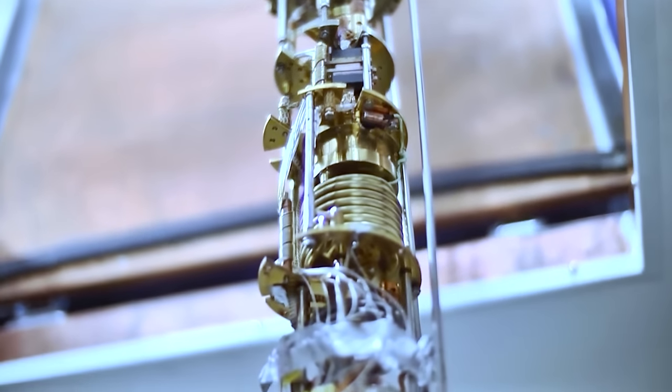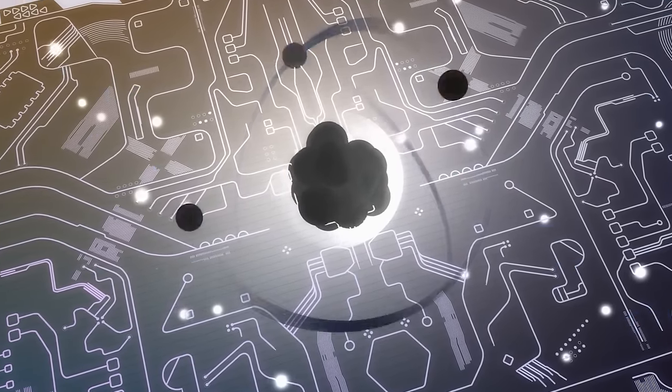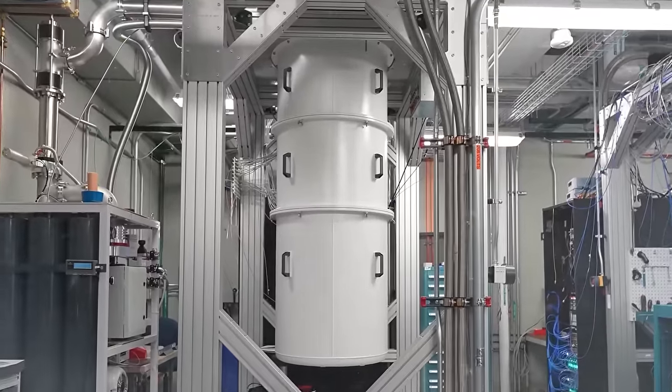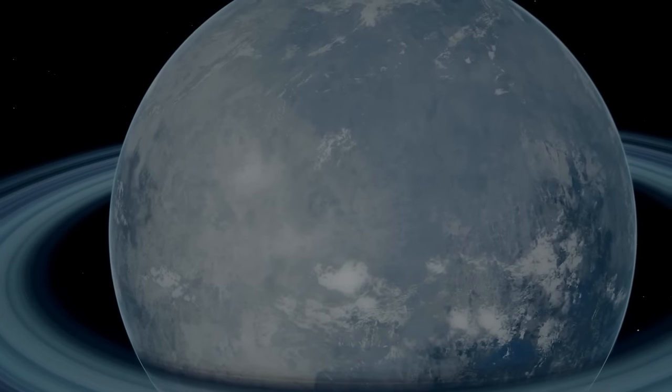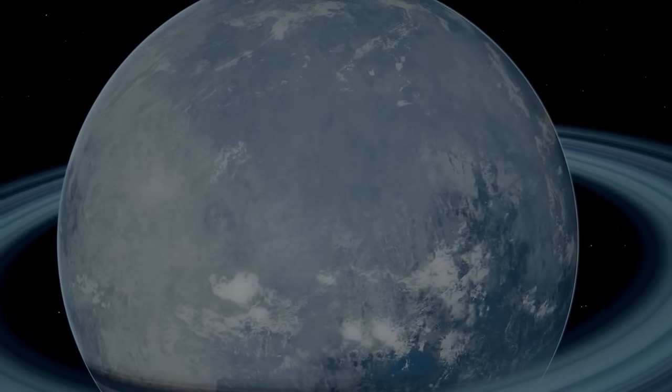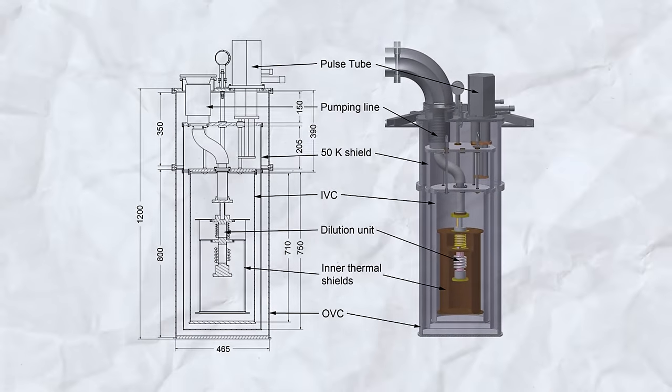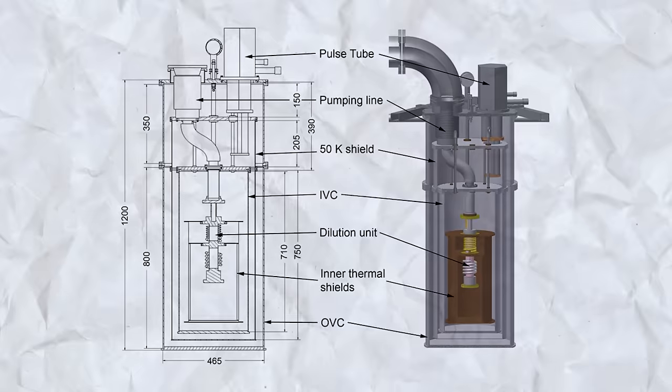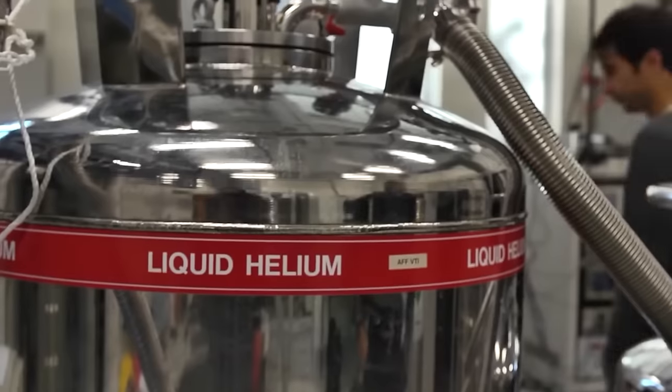This ultra-cold environment is vital for the qubits to maintain their coherence, allowing them to perform quantum operations without the interference of thermal energy. The sophistication of dilution refrigerators makes them akin to engineering marvels. Imagine creating a place within our labs that's colder than the vast expanses of outer space. These refrigerators manage to do just that, becoming one of the few places in the universe where such extreme conditions are artificially maintained. This isn't just for the sake of breaking records. Operating at these frigid temperatures is essential for reducing noise and quantum decoherence, which in turn preserves the qubits' quantum states, ensuring the accuracy and reliability of the quantum computations.